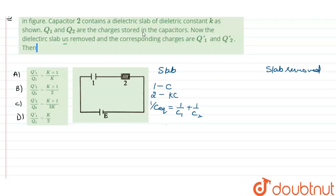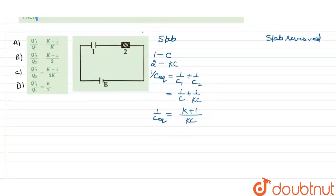So 1/C_eq = 1/C plus 1/(kC), and the answer becomes kC/(k+1). That is our C equivalent. So C equivalent becomes kC over k plus 1.